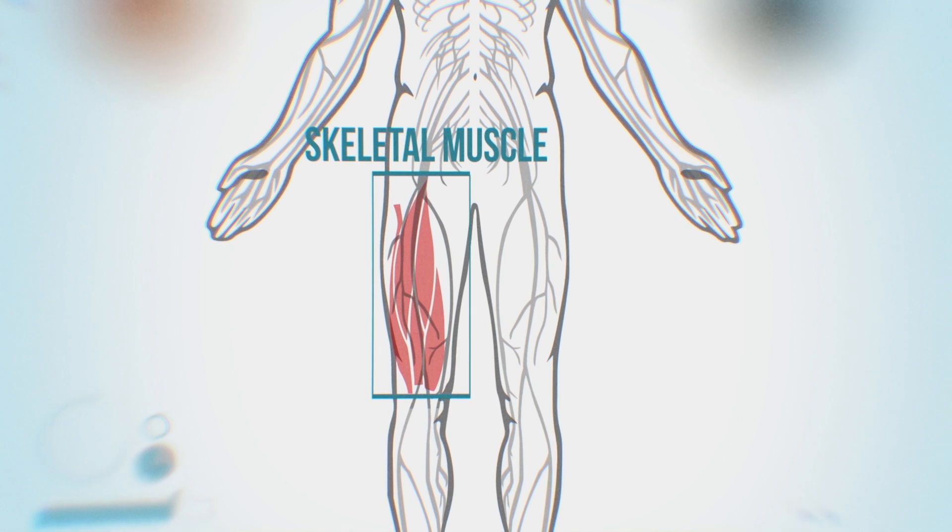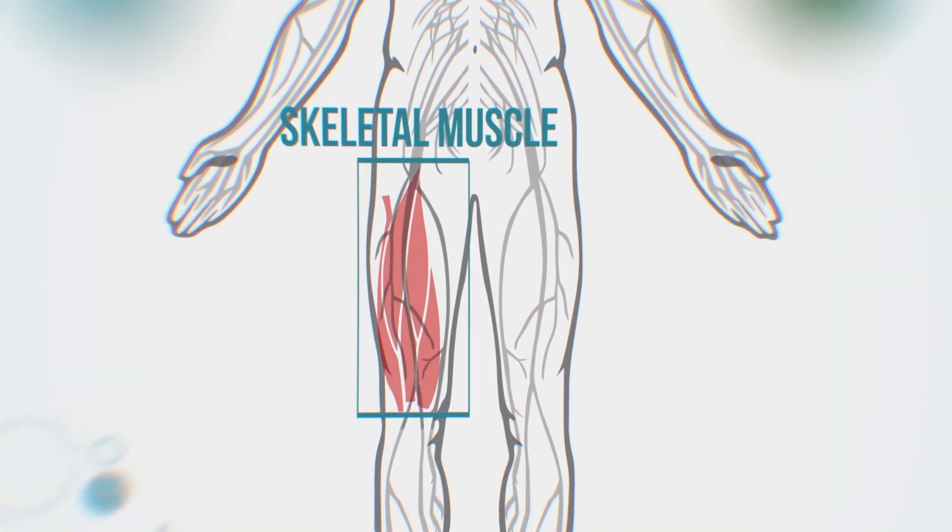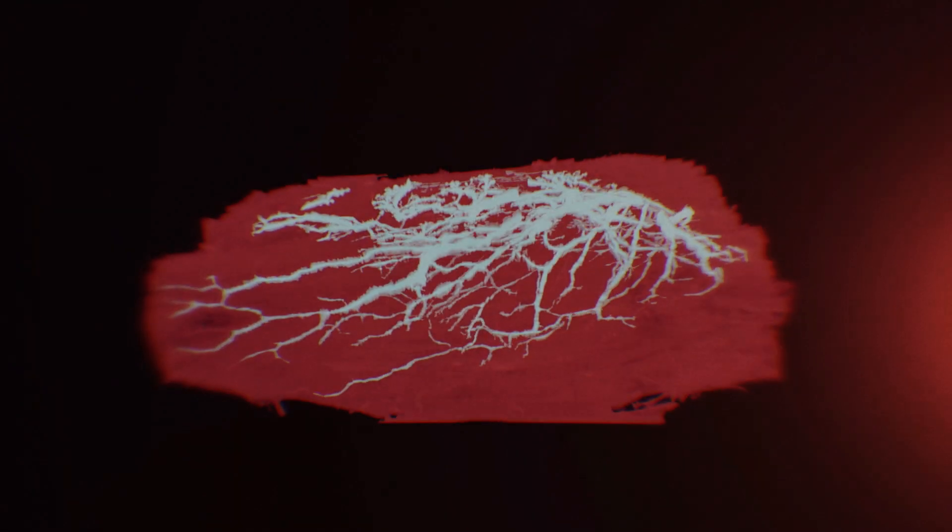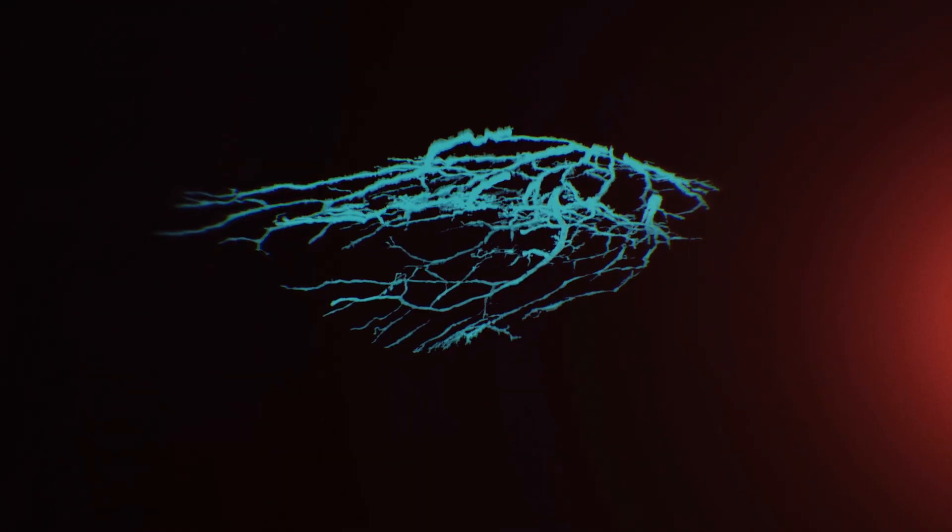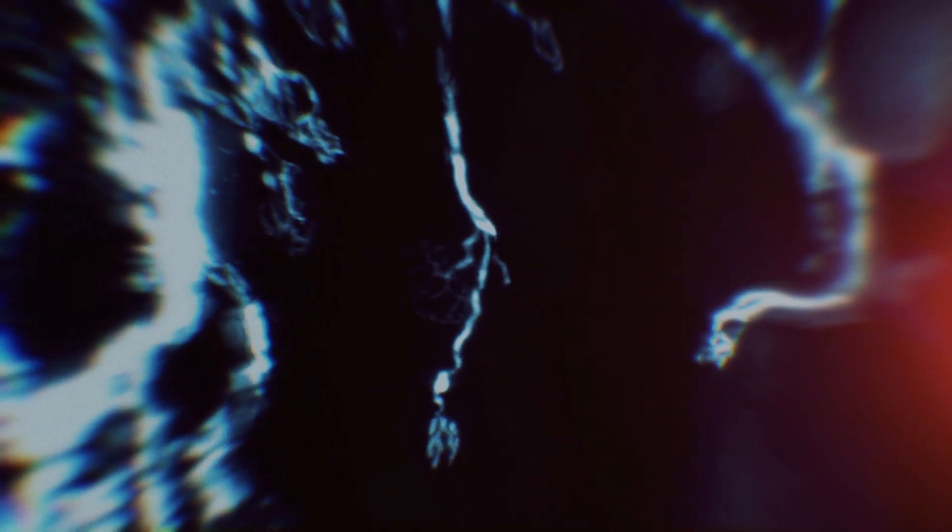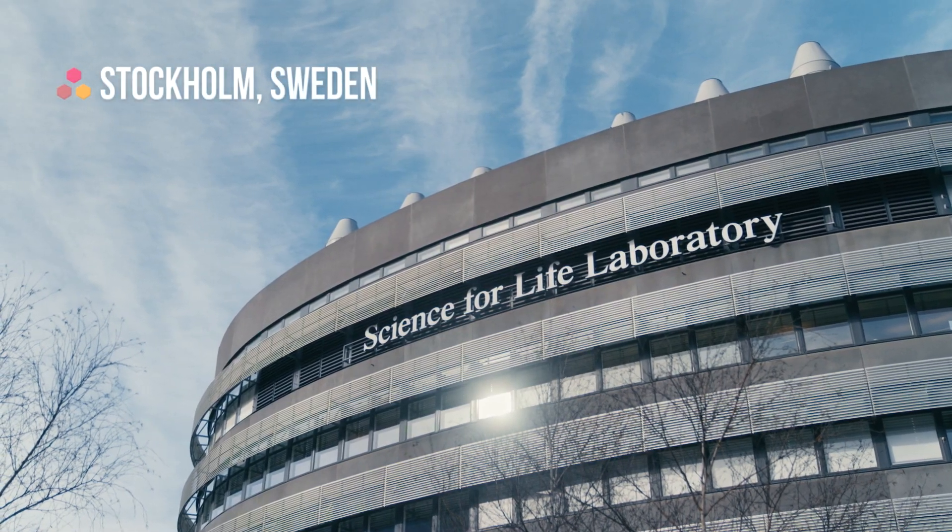Its main function is contraction, which results in us being able to move our bodies. The muscles are controlled by a finely tuned network of alpha motor neurons. But in the case of amyotrophic lateral sclerosis (ALS), the connections between the muscle fibers and the motor neurons fail.